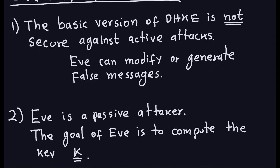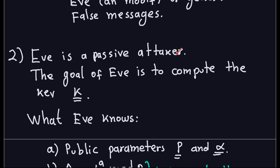Now let's suppose we have a passive attacker. A passive attacker is one who is only interested in decrypting the ciphertext or getting the key, which are equivalent to the same thing.